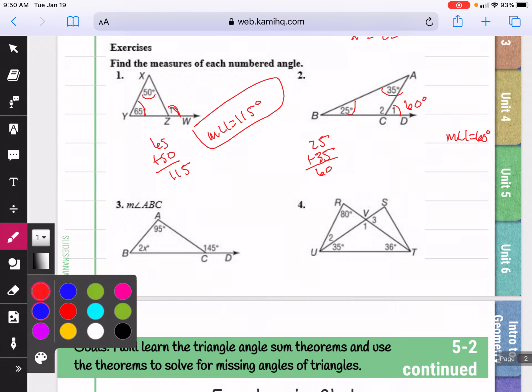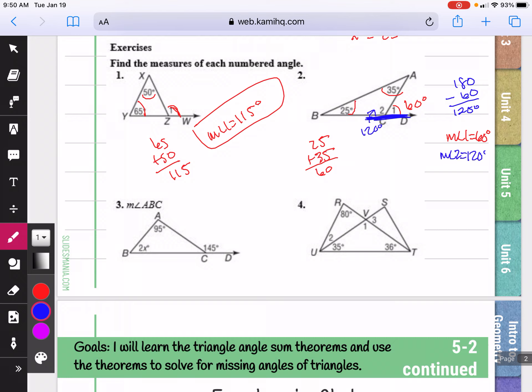And if you look at angle two now, if one is a straight line with angle one, we know straight lines are 180. So if I do 180 minus 60, I'll get 120 degrees for the measure of angle two. You could have also found angle two by adding angles A and B and then subtracting from 180 because the inside of a triangle sums to 180.